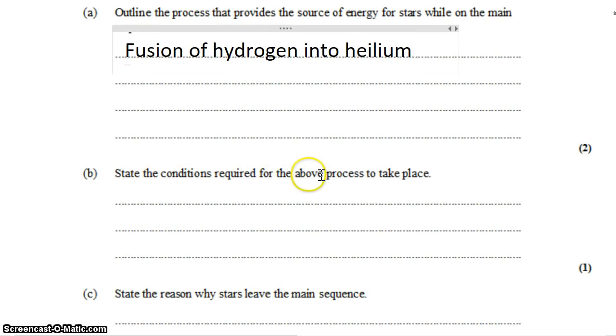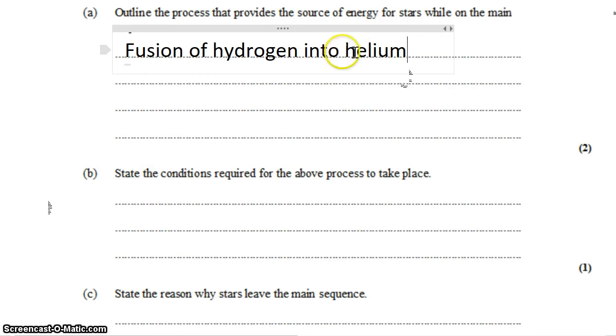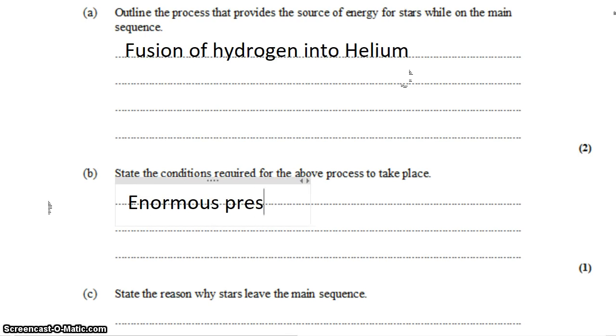To state the conditions required for the above process to take place, hydrogen atoms are loathe to get close to each other. They're made of one proton each, so they all have positive charge. It takes enormous pressure to get those like charges into one place. So you need enormous pressure, and with those enormous pressures, you get enormous temperature.